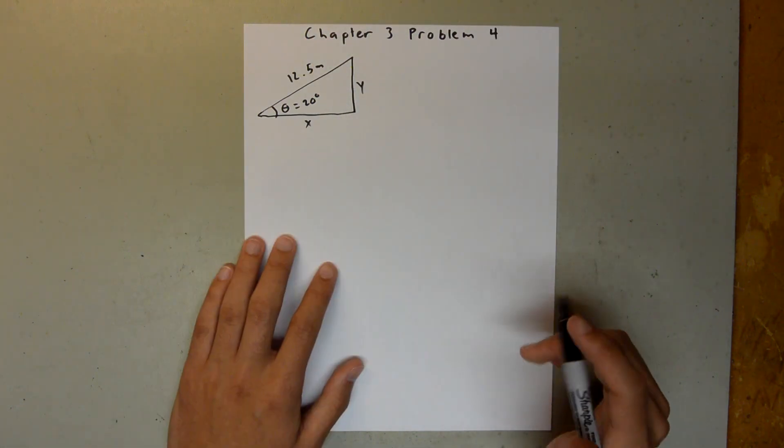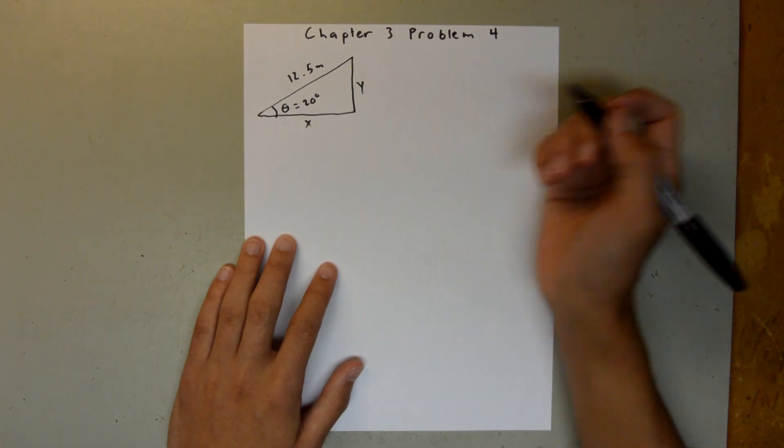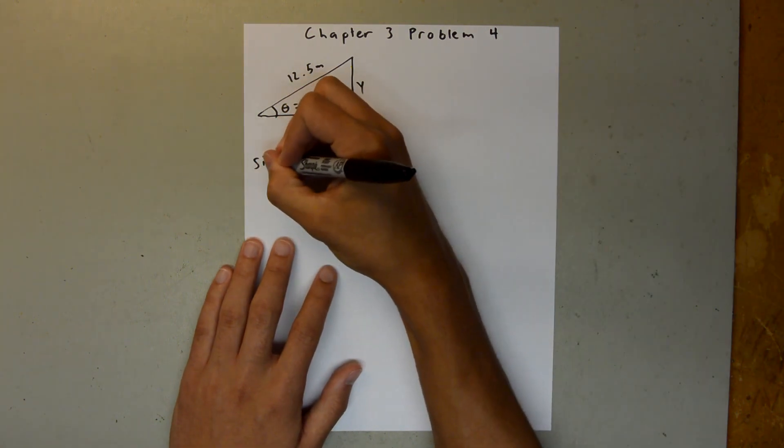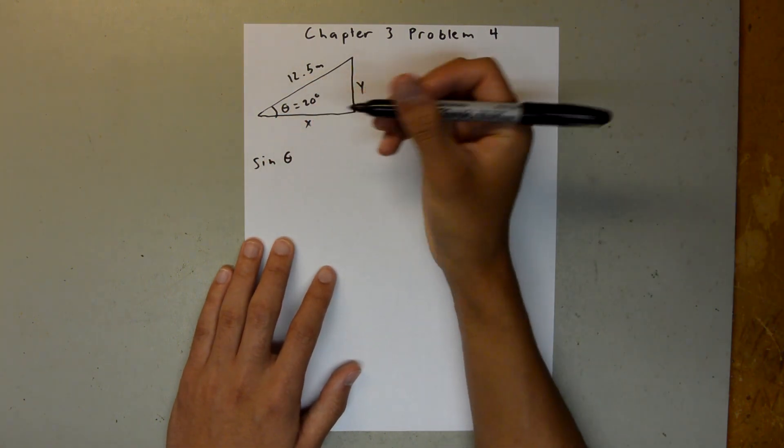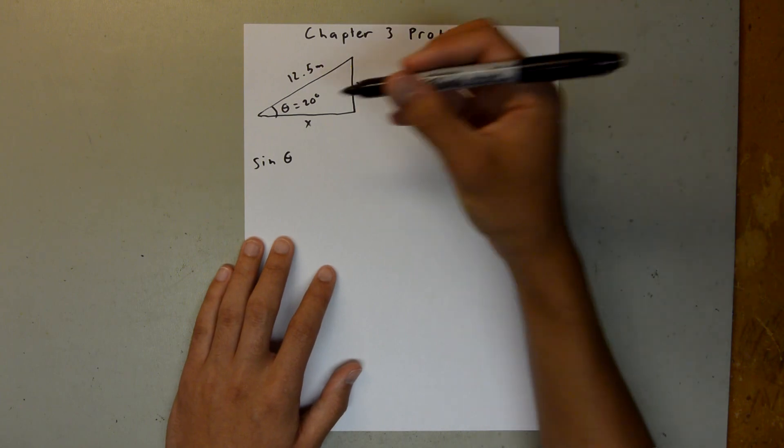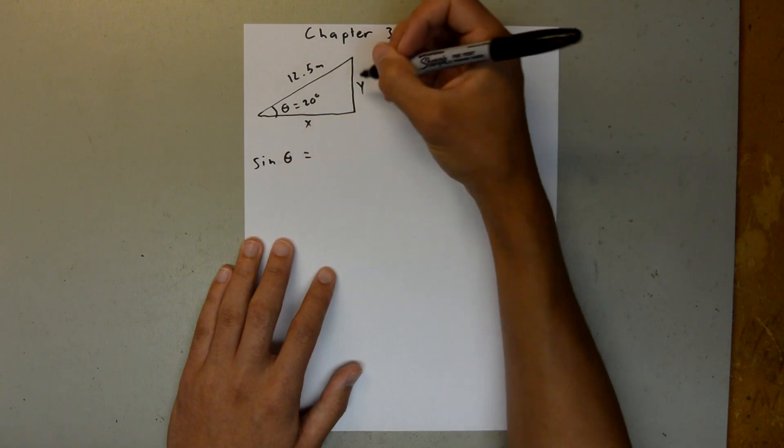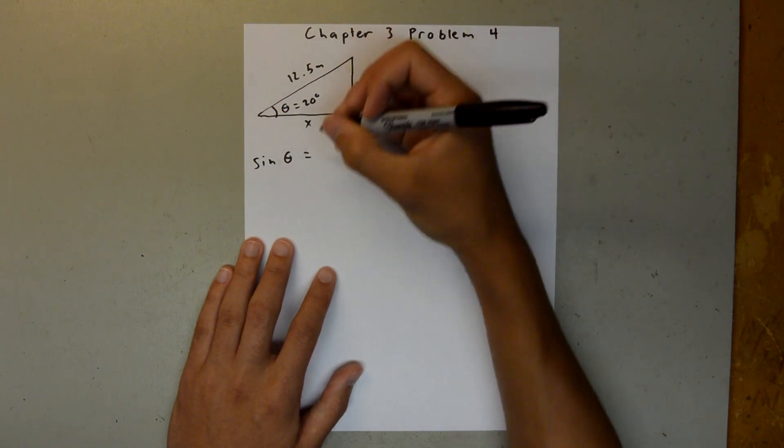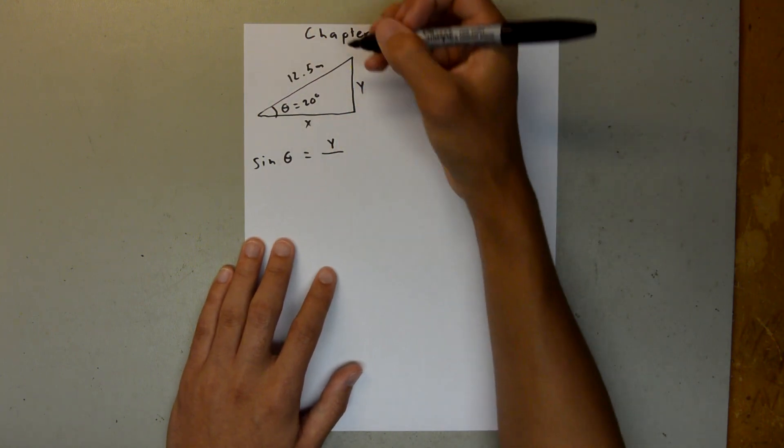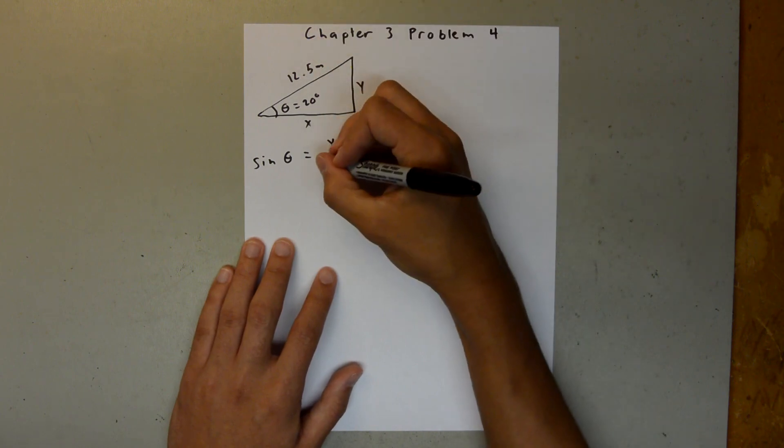So we can use trig to solve for x and y. We can say the sine of theta, and we know that the sine of theta is the opposite side over the hypotenuse. So this is going to be equal to the opposite side of the angle, which is y, over the hypotenuse, which we know is 12.5.